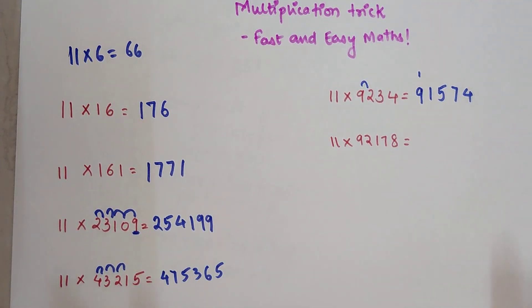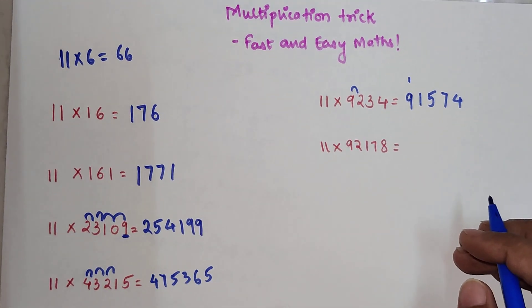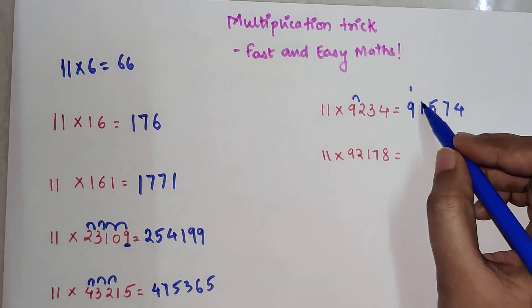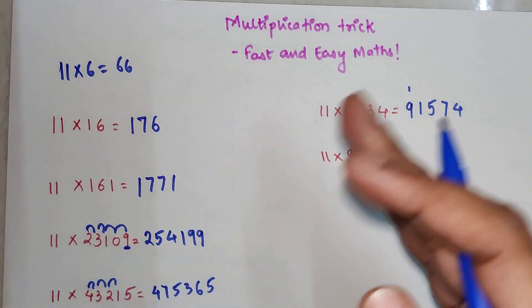But in case if there is a carry, then what happens is you write the unit digit as a part of your answer, and whatever is the 10th part gets added to the number after it.